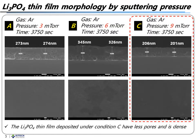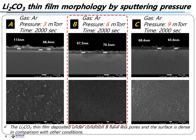This is the lithium phosphate thin film morphology by sputtering pressure. We changed sputtering pressure in an argon atmosphere and performed scanning electron microscopy analysis. As you can see in the figures, the thin film deposited under condition C had less pores in comparison with other conditions. For lithium carbonate, the thin film deposited under condition B showed less pores and a dense surface.